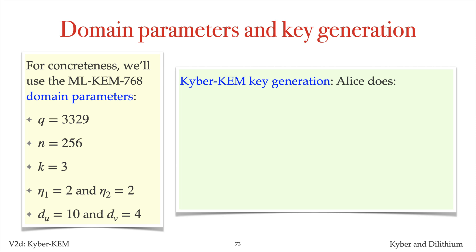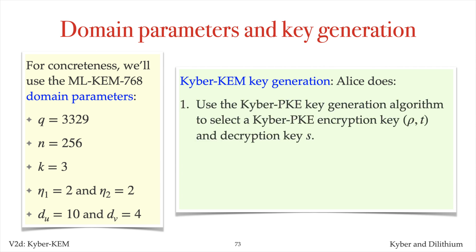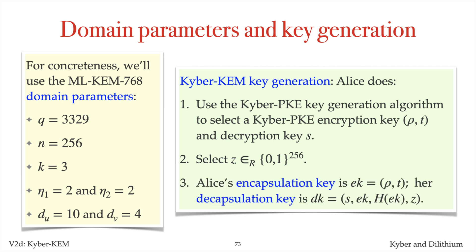Here is key generation for Kyber KEM. Alice selects an encryption key row t and decryption key s for the Kyber public key encryption scheme, then selects a random bit string z. Alice's encapsulation key ek is comprised of row and t. Her decapsulation key dk is comprised of s, ek, the hash of ek, and z.